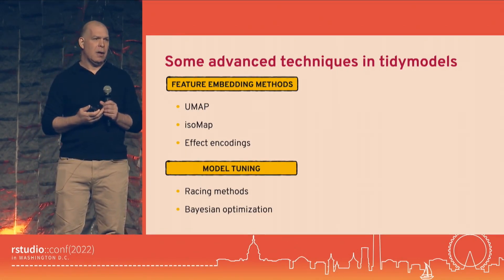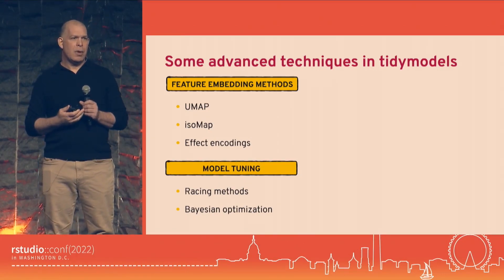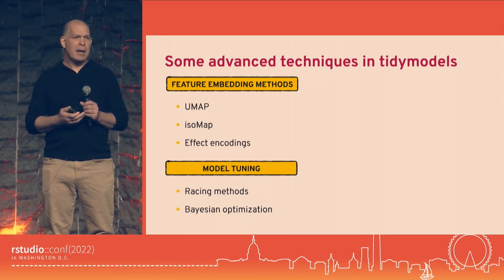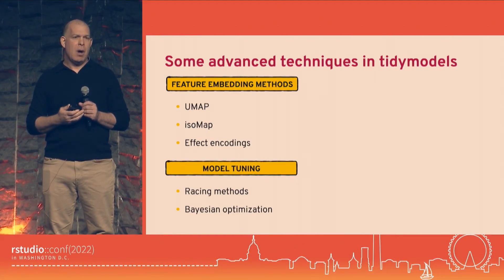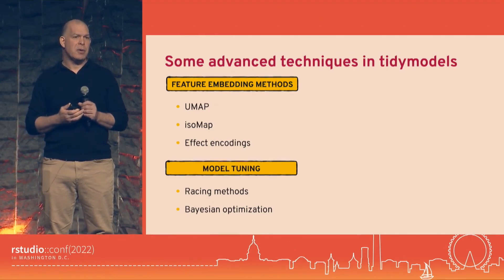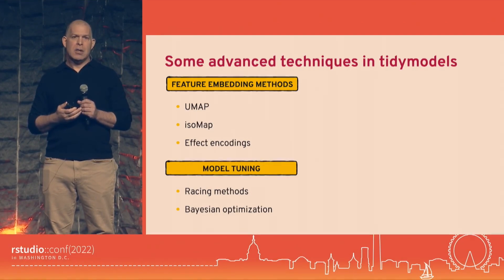We'll talk about model tuning a little more. Bayesian optimization is a tool pretty common on the deep learning or neural network side, but you can use it for anything. There are a few packages in R that do that but they're not well integrated with all types of models. We provide tuning methods for Bayesian optimization that you can use for a boosted tree, support vector machine, or whatever you're doing.